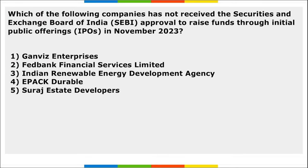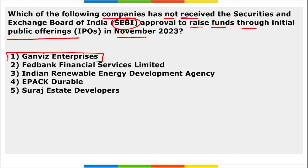Next: which of the following companies has not received SEBI approval to raise funds through an IPO in November 2023? It is Ganvis Enterprise — they did not receive SEBI approval to raise funds through an IPO in November; all others did.